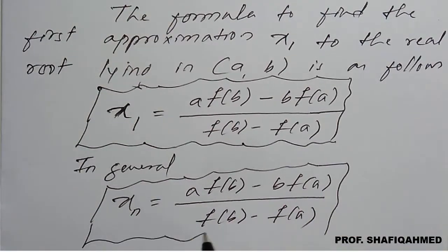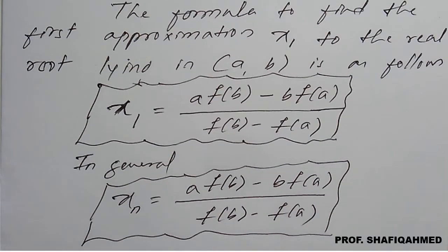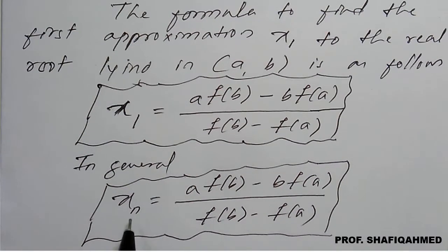1, 2, 3, 4, 5. So x1 is called first iteration or first approximation, x2 is called if n takes 2 here so x2 will become second iteration or second approximation, x3 will become third iteration or third approximation so on.